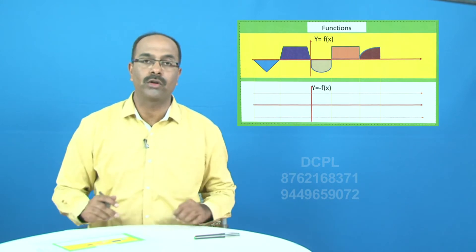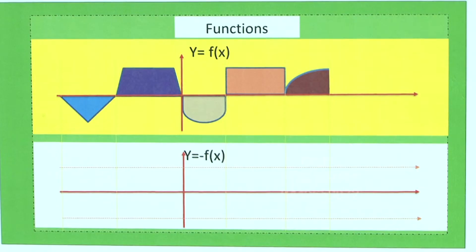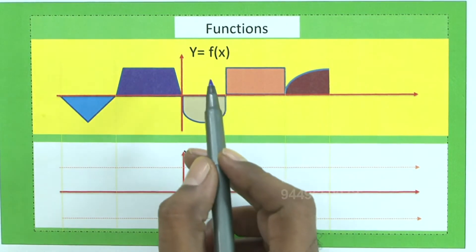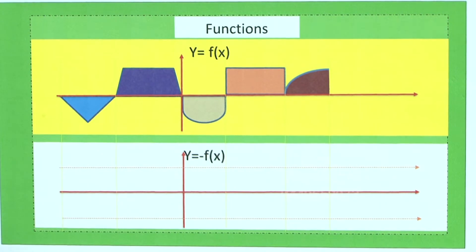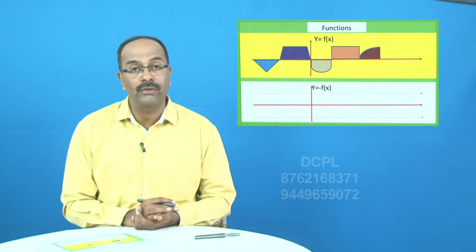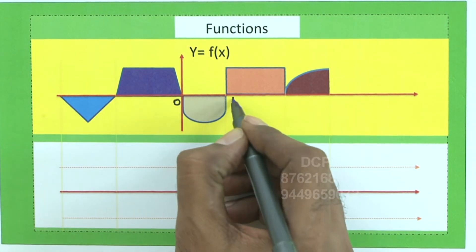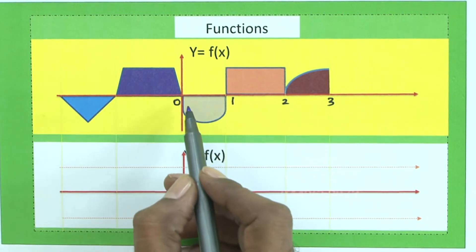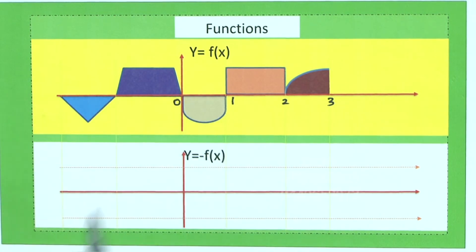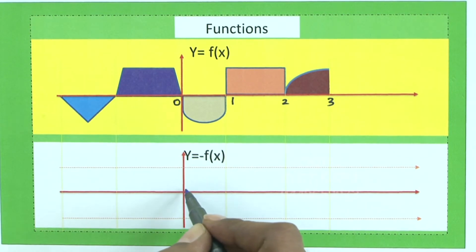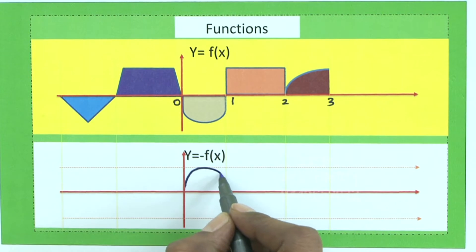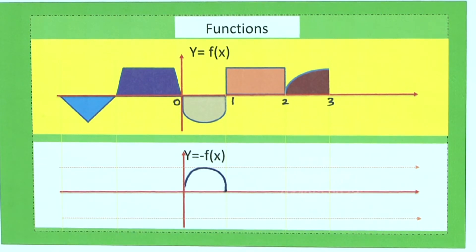Now let us discuss how to draw the graph of -f(x) from f(x). Looking at an arbitrary graph with f(x) given, we need to draw -f(x). Between 0 and 1 there is a sinusoidal curve in quadrant 4; for -f(x) we get the replica in quadrant 1. This is -f(x).